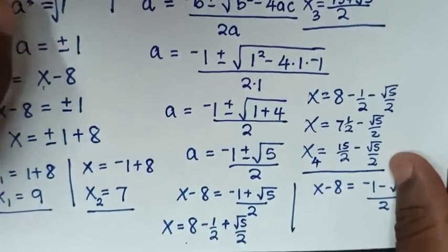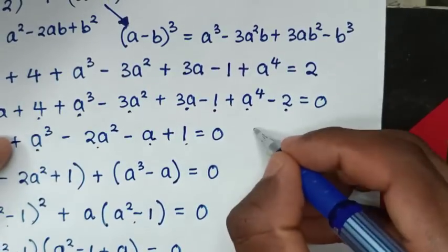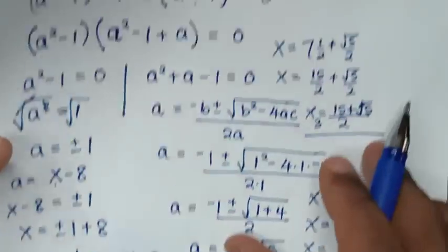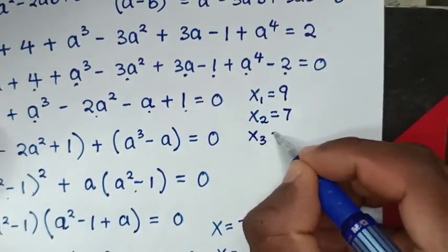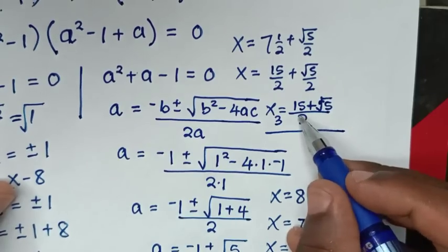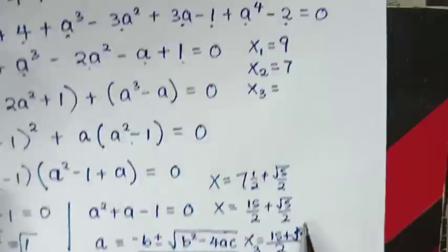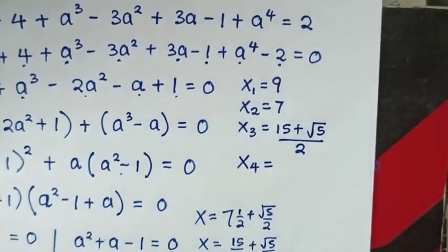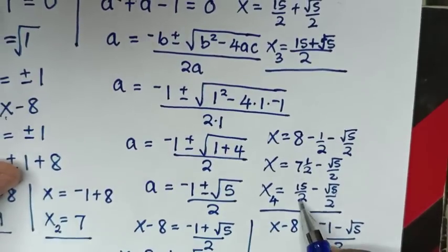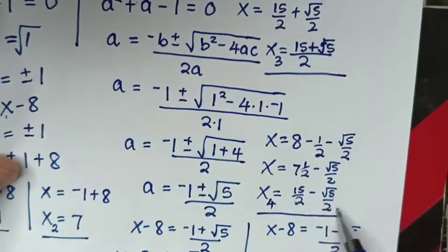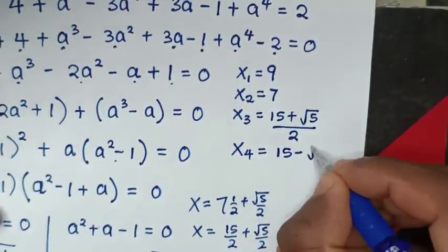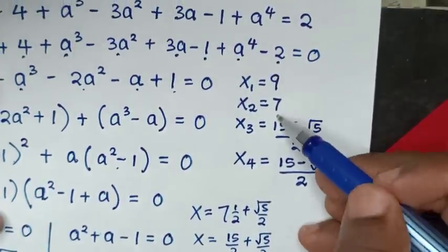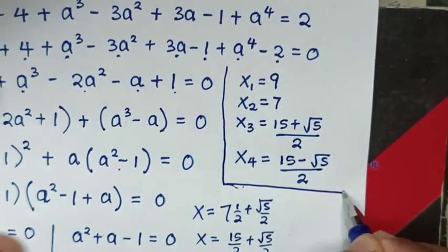Therefore, the conclusion from this problem: the first value of x is 9, the second value of x is 7, the third value of x is (15 plus square root of 5) over 2, and the fourth value of x is (15 minus square root of 5) over 2. These are all four values of x.